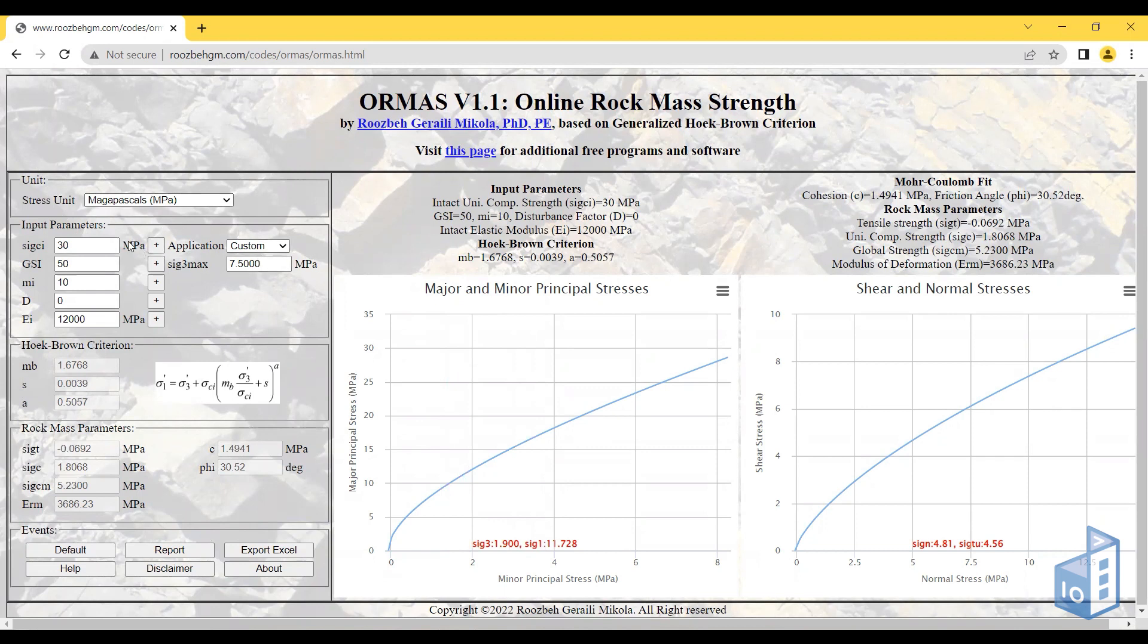Then you need to select the input parameters shown here. For the Hoek and Brown criteria, you need the uniaxial intact strength rock mass.